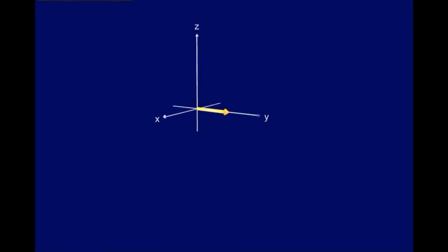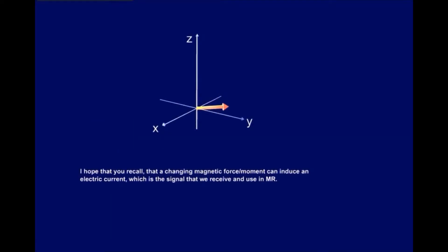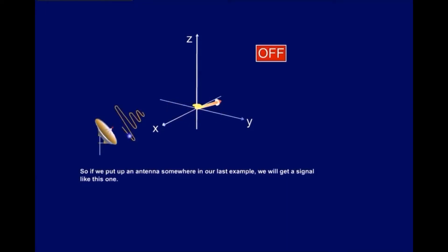I hope that you recall that a changing magnetic force, moment, can induce an electric current, which is the signal that we receive and use in MR. So, if we put up an antenna somewhere in our last example, we will get a signal like this one.